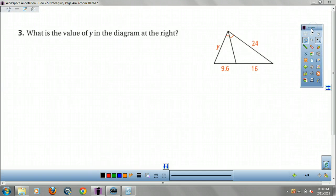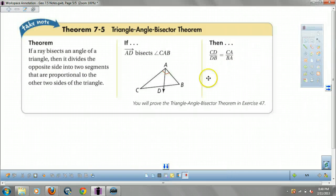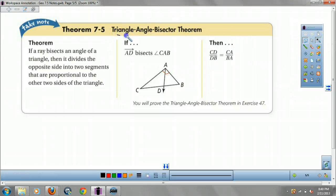I feel like I skipped a theorem. I did forget a theorem, but it's here now. Triangle bisector theorem. What it is is if you have an angle bisector on a triangle, those two angles are congruent. Then CD over DB equals CA over BA.